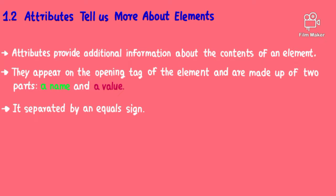Section 1.2: Attributes tell us more about elements. Attributes provide additional information about the contents of an element. They appear on the opening tag of the element and are made up of two parts: attribute name and attribute value, separated by an equals sign.